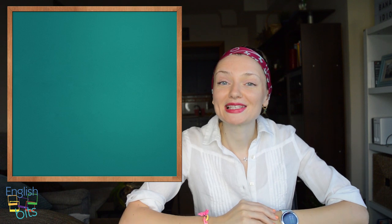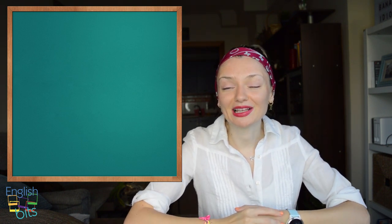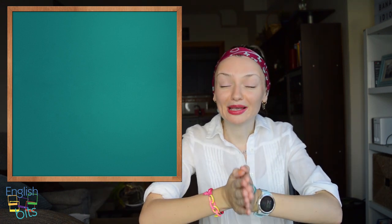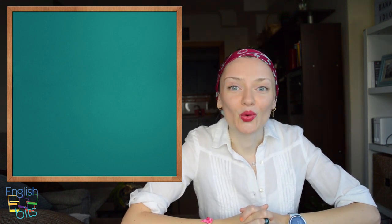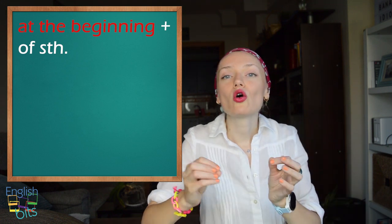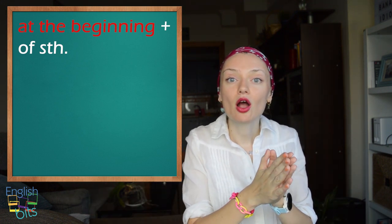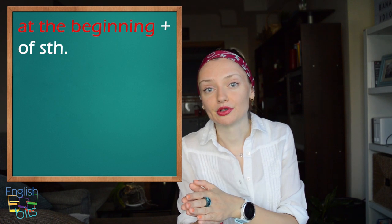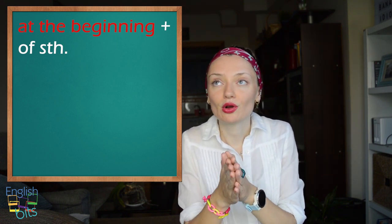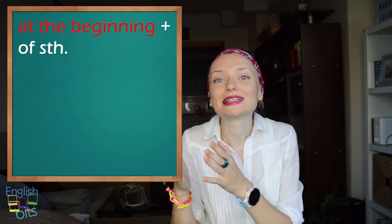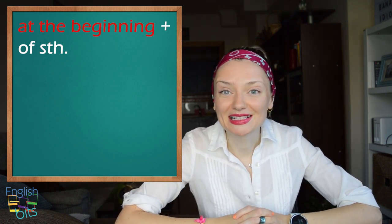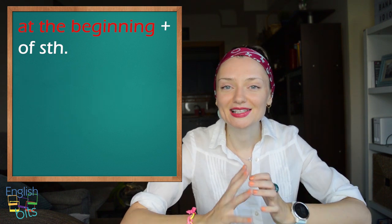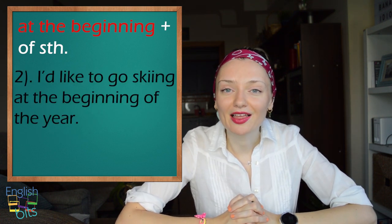Now let's move on to our second grammar point: the difference between at the beginning and in the beginning. Important: note the spelling of the word beginning, which has a double n. We use at the beginning with of something — for example: at the beginning of the week, at the beginning of the match, at the beginning of September, or at the beginning of the concert. There always has to be at the beginning of something. For example: 'The teacher introduced himself at the beginning of the class,' and 'I'd like to go skiing at the beginning of the year.'